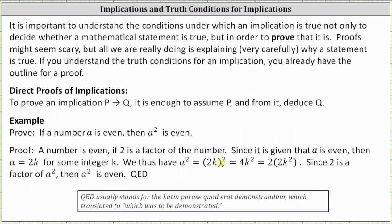Thus we have a² = (2k)² = 4k² = 2(2k²). Since 2 is a factor of a², then it follows that a² is even, and we often conclude a proof with QED.